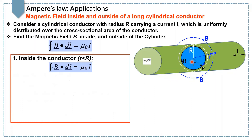Hello dear students. In this lecture we will find the magnetic field inside and outside of a long cylindrical conductor having radius R, with current i passing through it. Please note that the current is uniformly distributed over the cross-sectional area of this conductor.